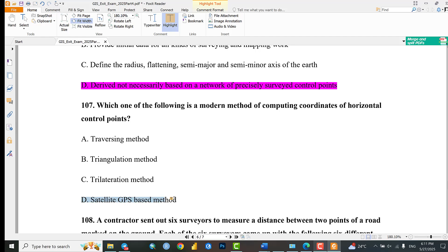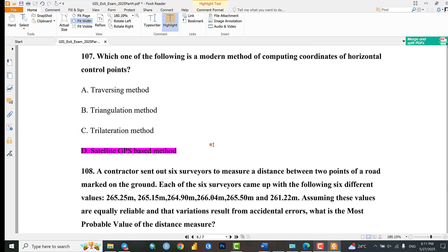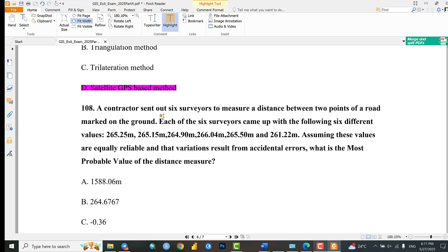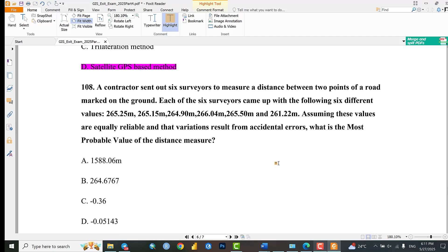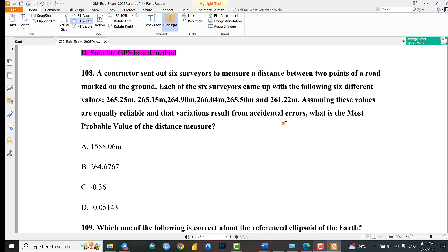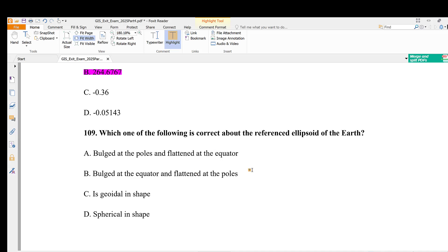Question 108: A contractor sent out six surveyors to measure the return between two points or error markers on the ground. Each of the six surveyors came up with the following six values. Assuming these values are readily available and that variations are from accidental errors, what is the most probable value of the distance measured, or probability of errors? The probability of errors should be calculated using this amount equation.